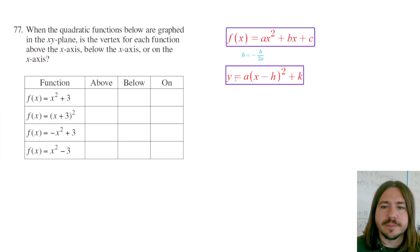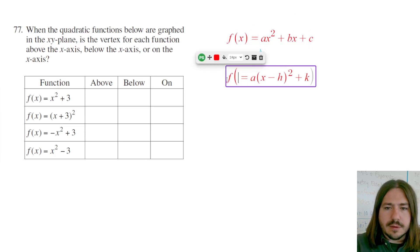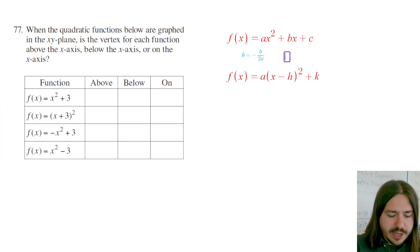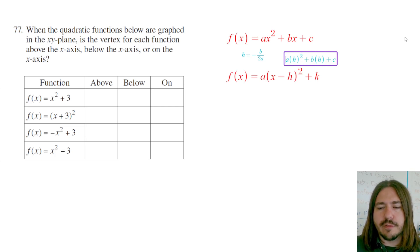So to get the k when your equation's in standard form, you're gonna simply take the h value that you got and just evaluate that by plugging it into the equation. So it'll be a times h squared plus b times h plus c. So everywhere where you see x, you just replace that with h, and then you'll get your k.